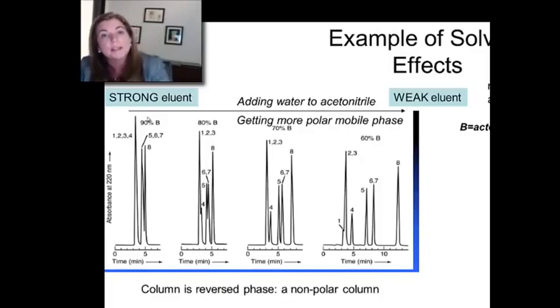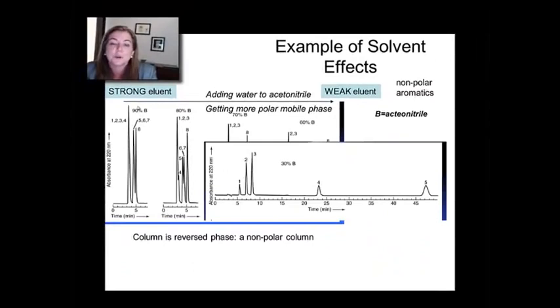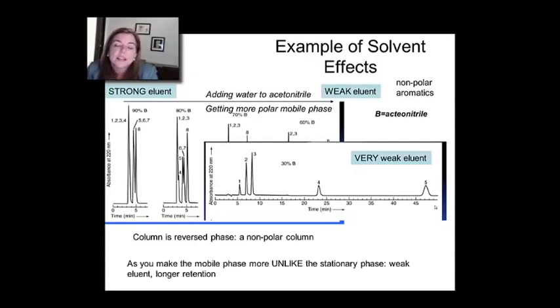Now as you put more water in, you weaken that eluent and it starts to allow for analyte interactions. They spread out. They get much longer. In fact, if you go to 30% acetonitrile, it's almost pure water. Look at this. This last peak comes out almost in 46 minutes. It is a very weak eluent when it's only 30% acetonitrile. And so in this case, you can sort of see that as you make the mobile phase more unlike the stationary phase, you get much, much longer retention times. And in fact, it's exquisitely sensitive. We went from a separation where everything is piled on top of each other, only took five minutes, to a kind of decent separation, to a really long separation.